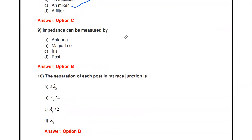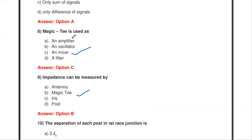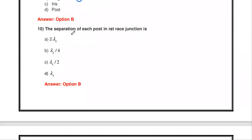The next question: impedance can be measured by — antenna, magic T, erase, or post? Impedance can be measured by magic T. This is one of the applications of magic T. So magic T is used as a mixing operation in a microwave receiver and also to measure impedance.